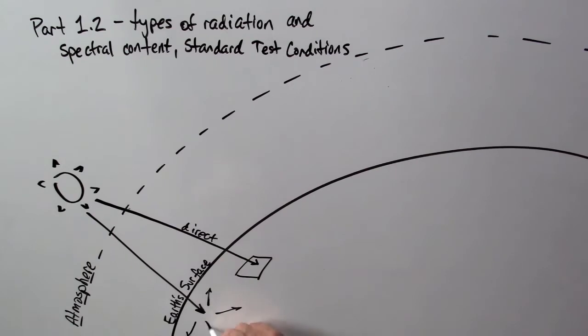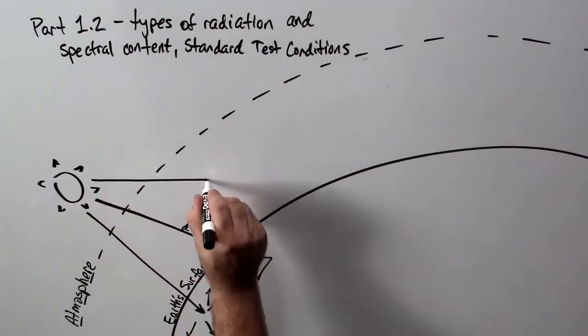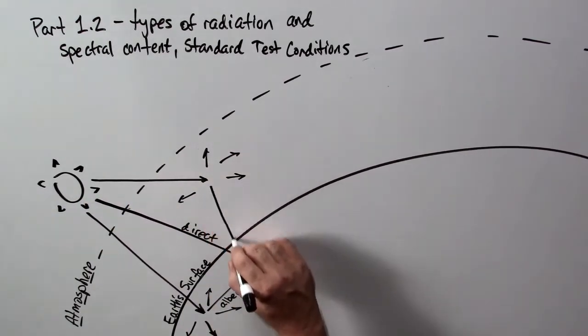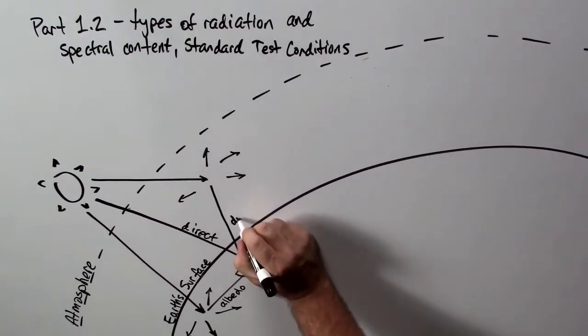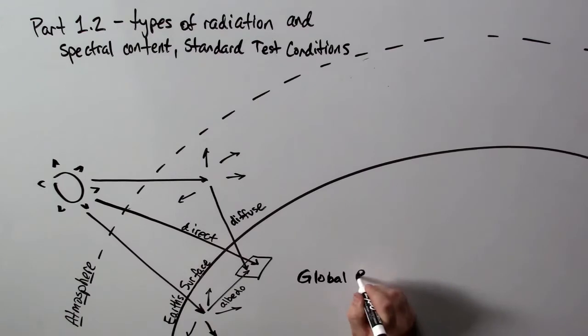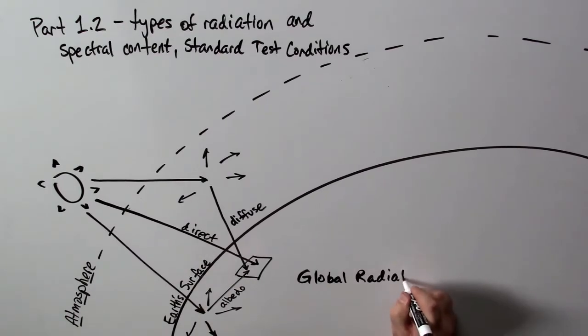An additional component of radiation is that which is scattered off of the Earth's surface, such as mountains or snow. This is called albedo. A third component of that radiation is the sun's light that scatters off the atmosphere itself—dust particles, air molecules, and so forth. When that reaches the solar panel, we call it diffuse radiation.